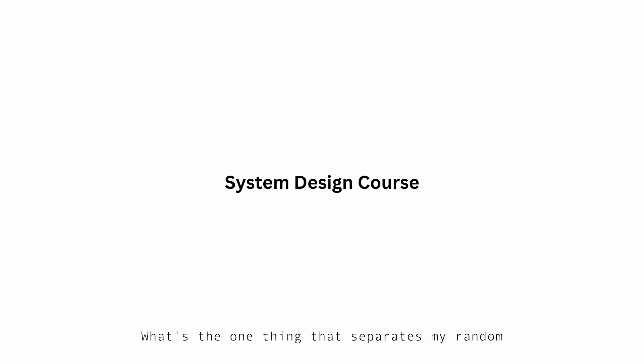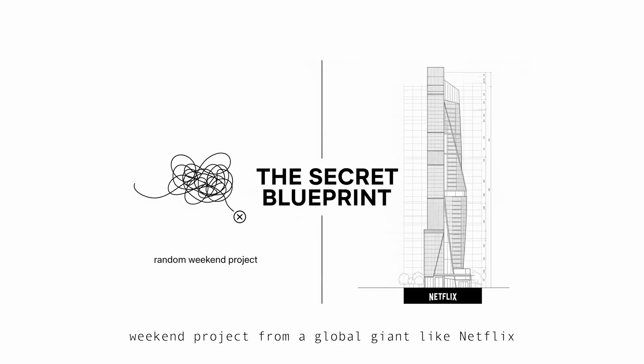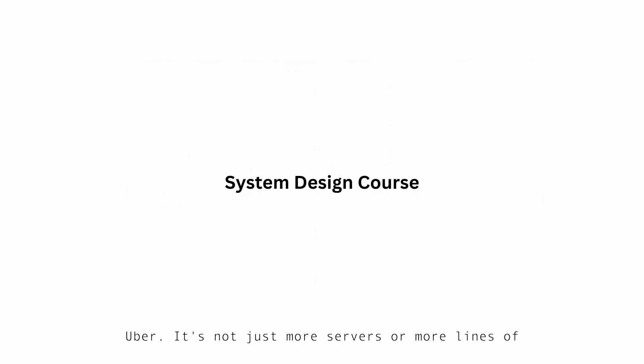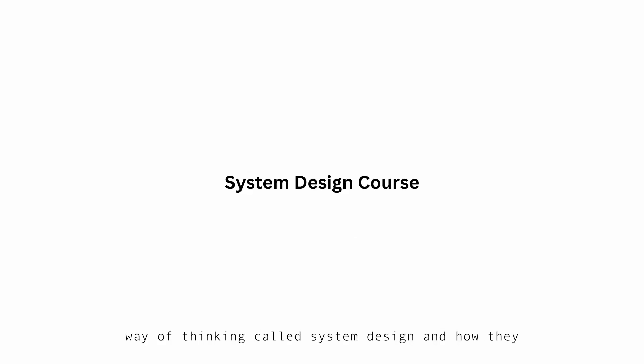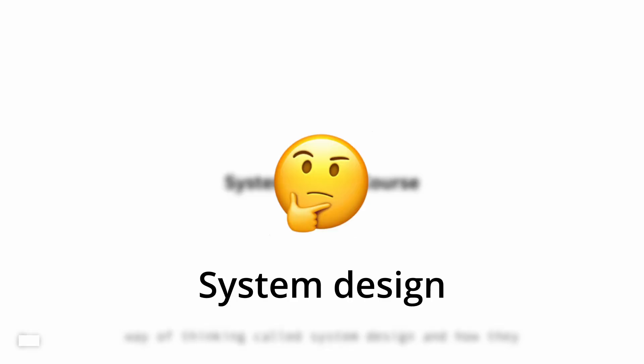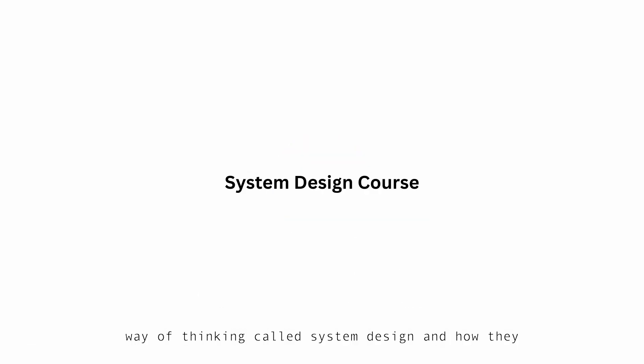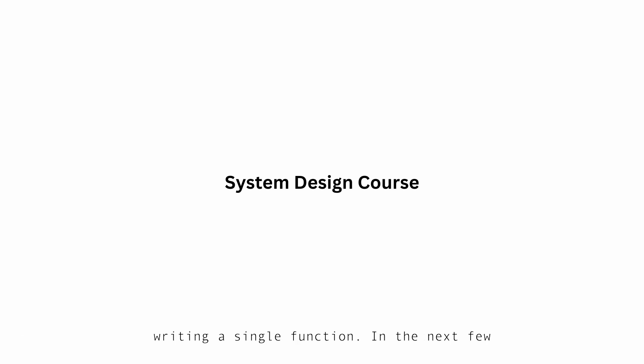What's the one thing that separates a random weekend project from a global giant like Netflix or Uber? It's not just more servers or more lines of code — it's their blueprint. It's the specific way of thinking called system design, and how they plan for such massive scale without even writing a single function. In the next few minutes, we will learn the exact framework they use.